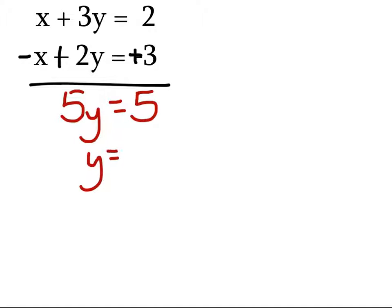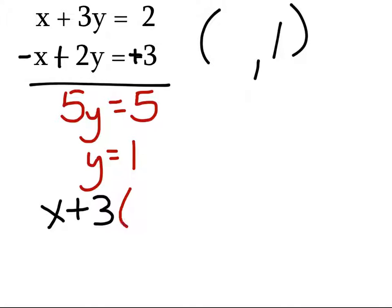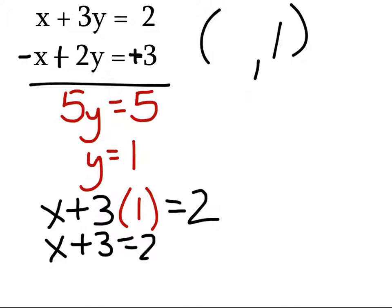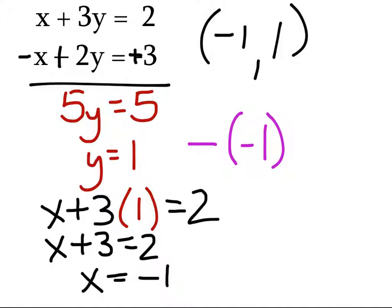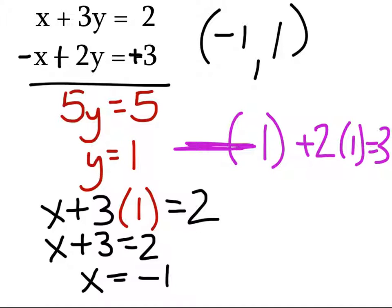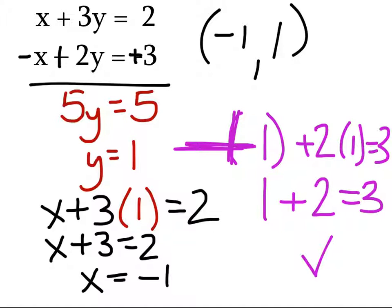5Y equals 5, so Y equals 1. Now that we have that, let's do the top equation. X plus 3 times Y, which is 1, equals 2. So X plus 3 equals 2, which means X equals negative 1. We'll double check this by putting everything into the bottom equation. Negative X, which is negative 1, plus 2 times Y, which is 1, should equal positive 3. That's 1 plus 2 times 1, which is 2. Does that equal 3? Yes, it does. Checked. This is our answer.